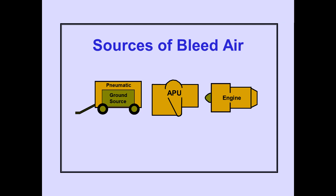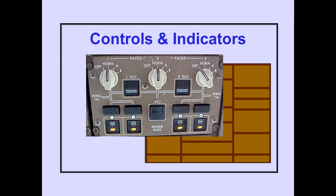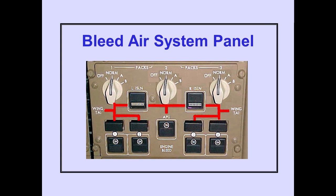There are three sources of bleed air: ground source, APU, and engines. Bleed air from a ground source may be used to pressurize the bleed air system, with connectors located on the fuselage. Controls and indicators for the bleed air system are located on the overhead panel, which is laid out schematically to represent the bleed air system.